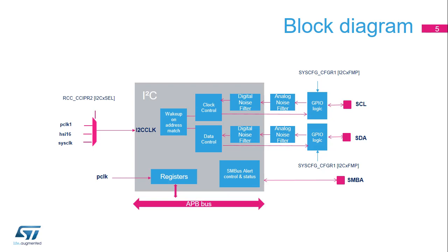Here is the I2C block diagram. The registers are accessed through the APB bus, and the peripheral is clocked with the I2C clock, which is independent from the APB clock. The I2C clock can be selected from among the system clock (SYSCLK), the high-speed internal 16 MHz RC oscillator clock (HSI-16), and the APB-1 clock (PCLK-1).